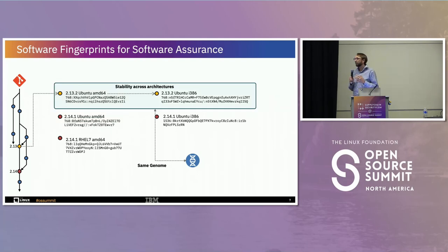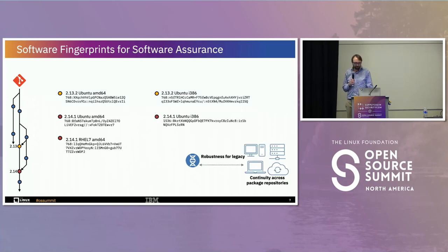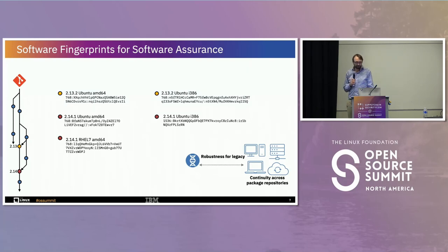We also want stability across architectures — x86-64, PowerPC, ARM — so that we can assure that across all different architectures the binary is doing the same task, even though it was compiled differently. And finally, we want this to be very robust so we can run it against all of our legacy systems.